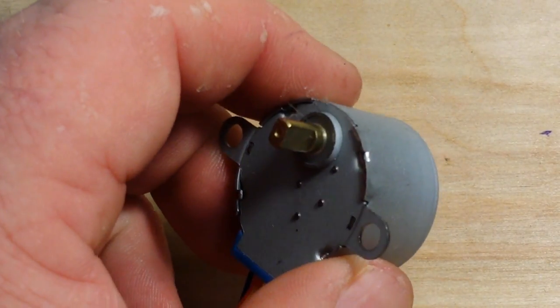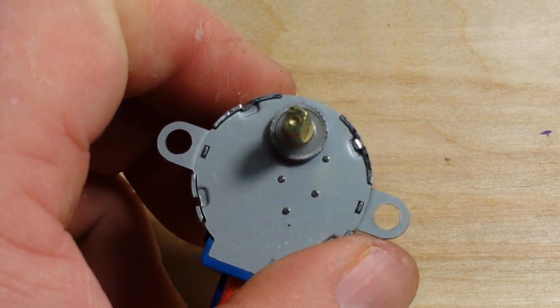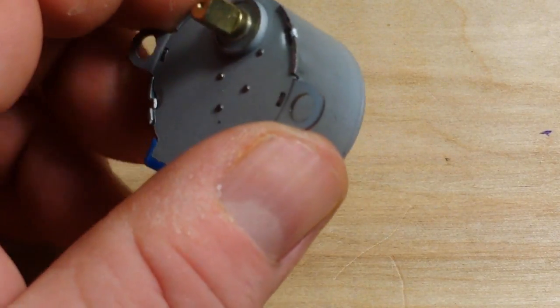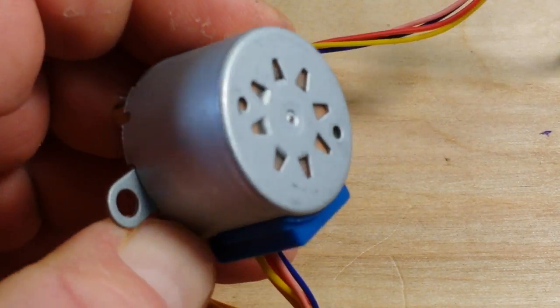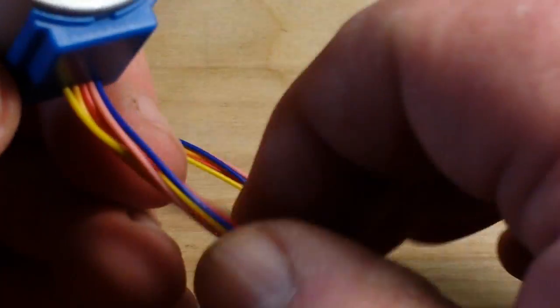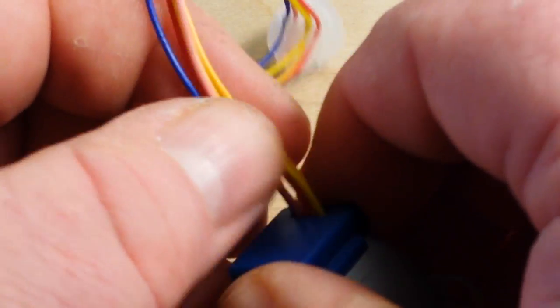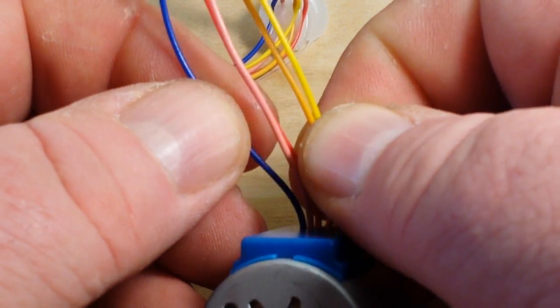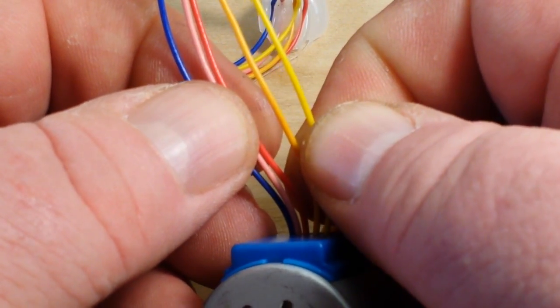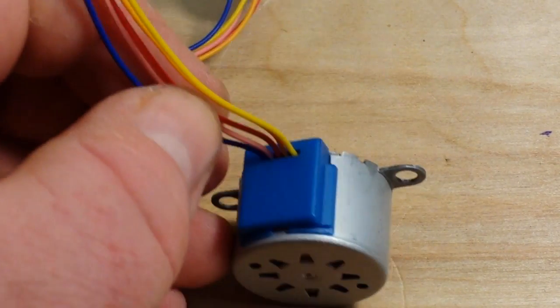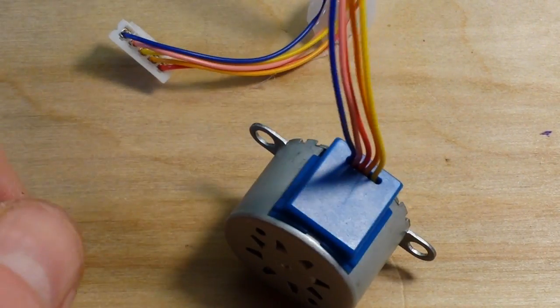Now here is our stepper motor which is an entirely different animal. This motor is designed to be extremely precise and controlled. And you can see here we've got five separate colored wires and we can't just put a voltage on our stepper motor.